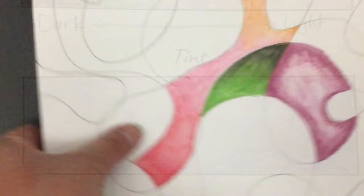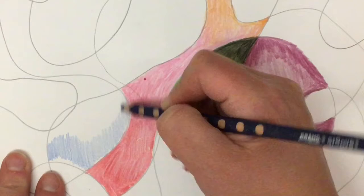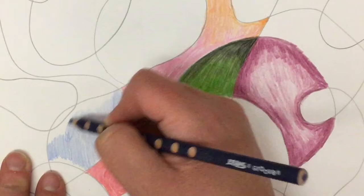All right, so tint, tint is where we add white to a color. So I'm going to experiment with this a little with the blue. And I'm going to put a really light layer of the blue. And I'm just going to fill in the whole shape with just very lightly.